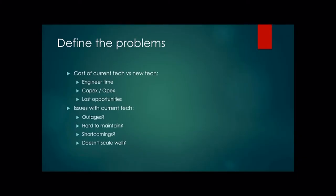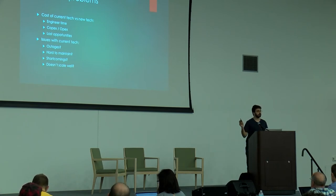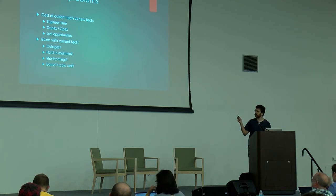So the first thing, as I mentioned, is you have to define the problems you're trying to solve. Find out how much of your current tech you're spending engineer time on just fixing stuff that's broken. How much is because it doesn't scale well — maybe you're having to buy bigger and faster hardware that you didn't plan for a few years ago. And what are you missing out on by holding on to legacy technologies? You need to be able to concretely say what it is you're solving and what success looks like at the end.